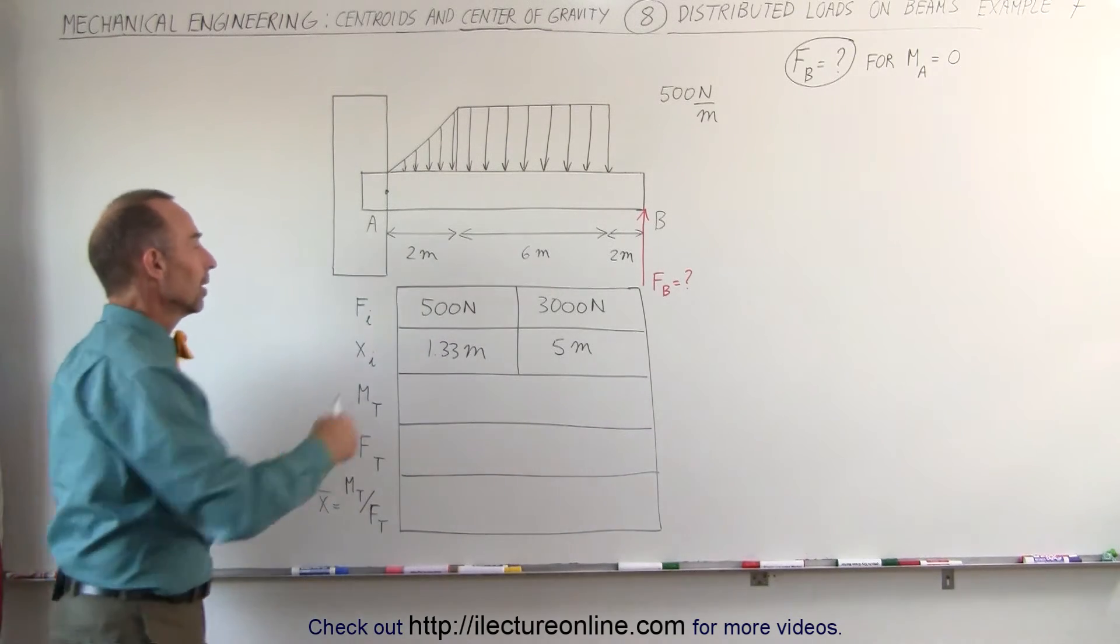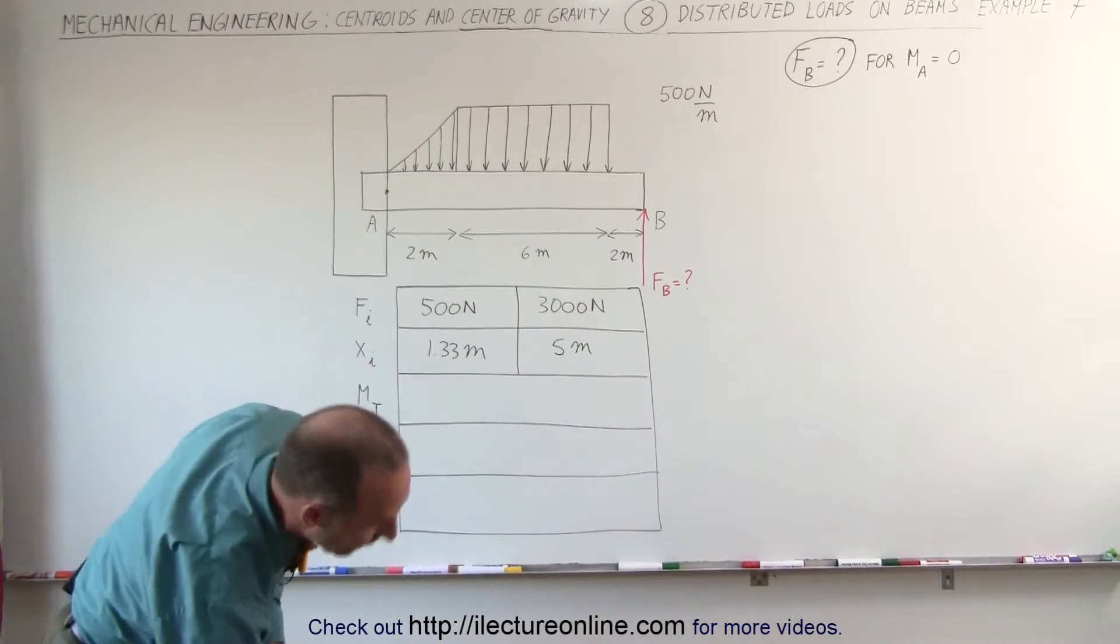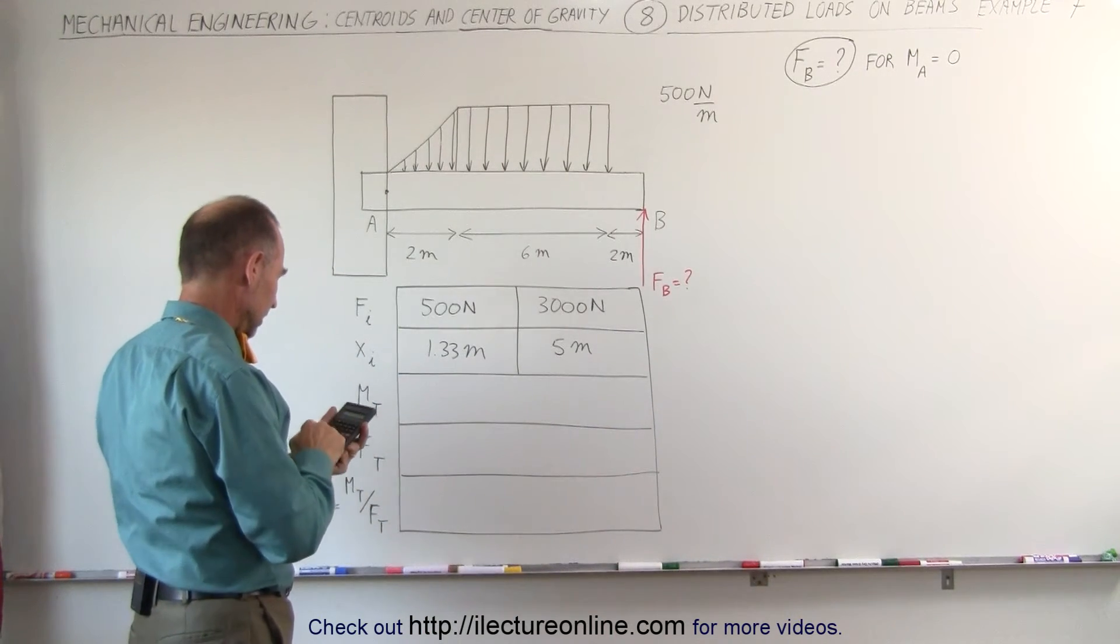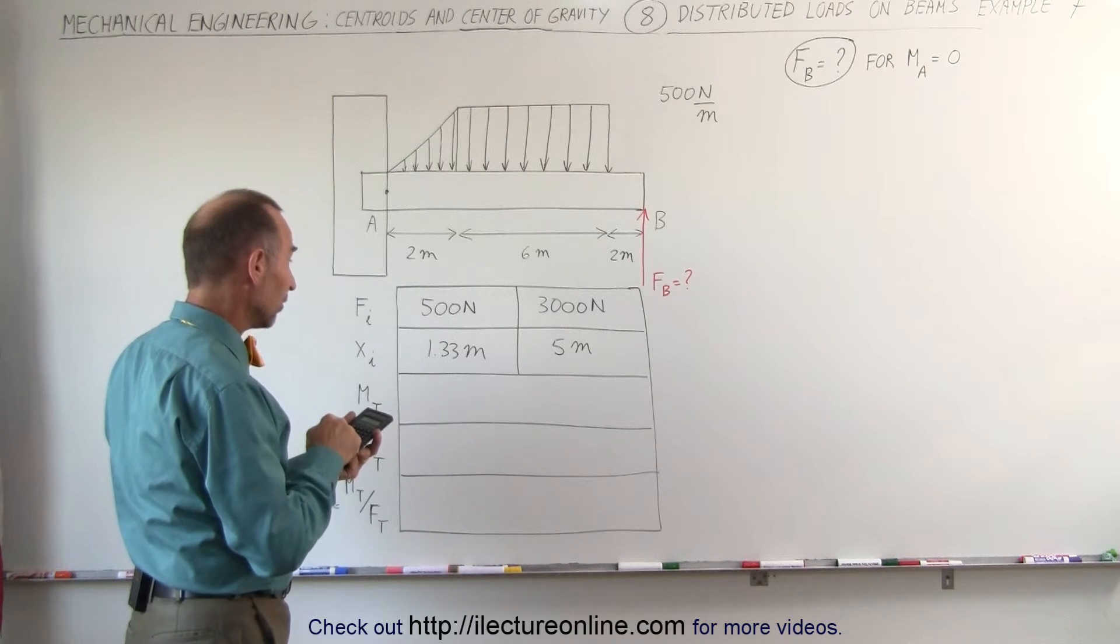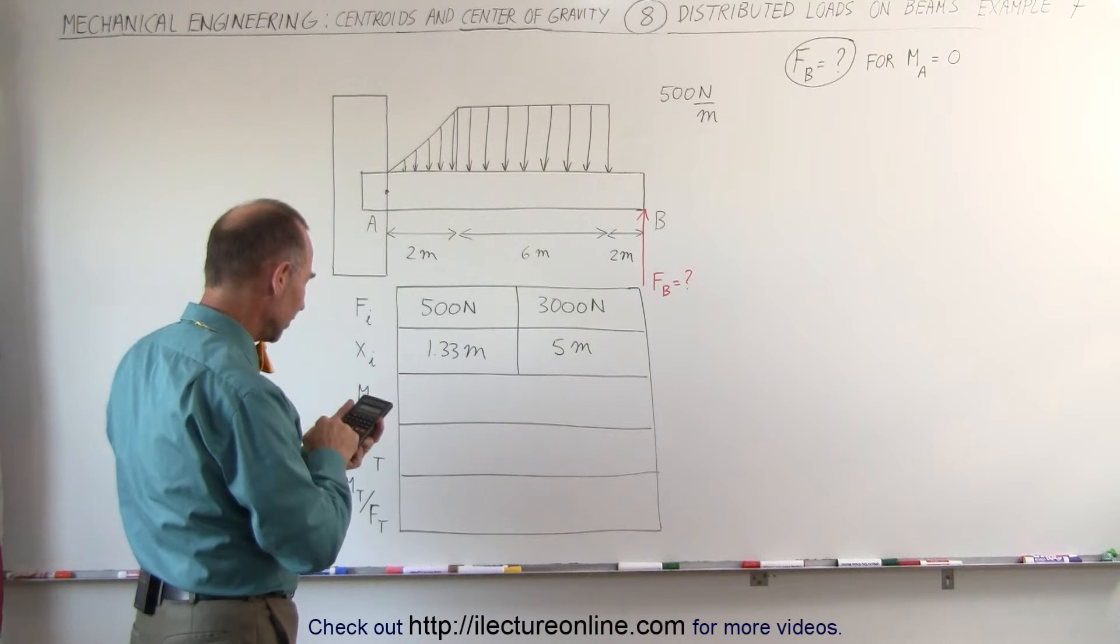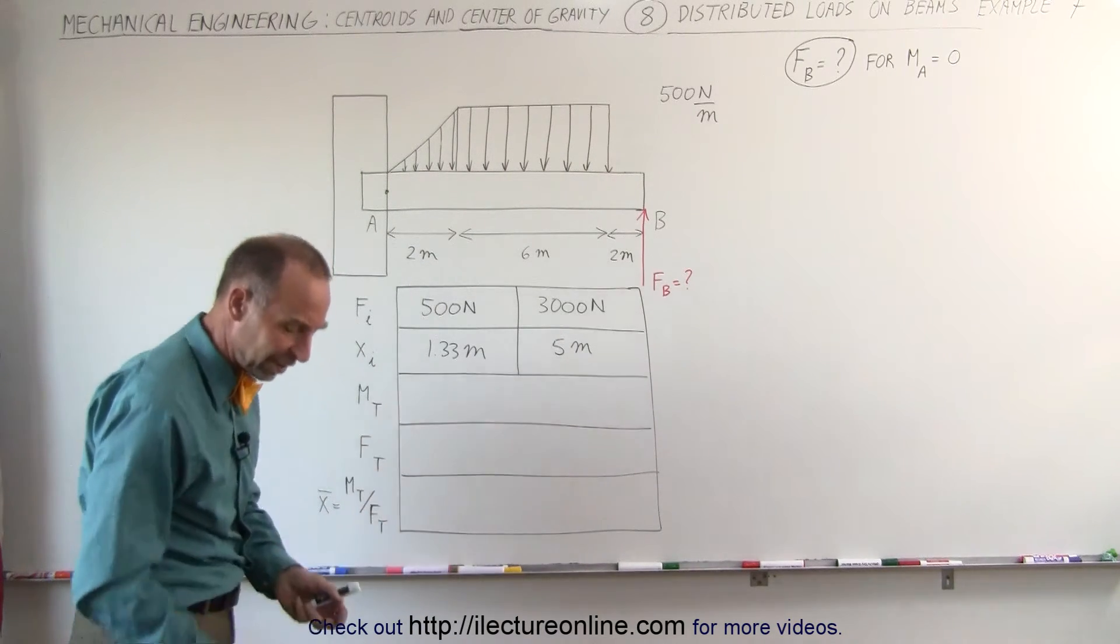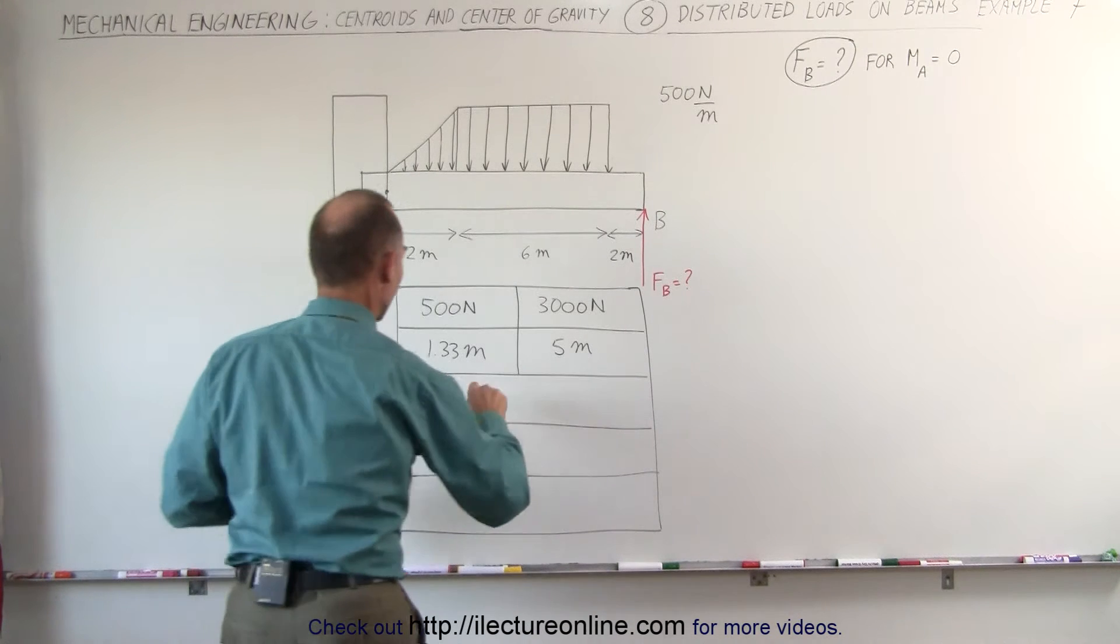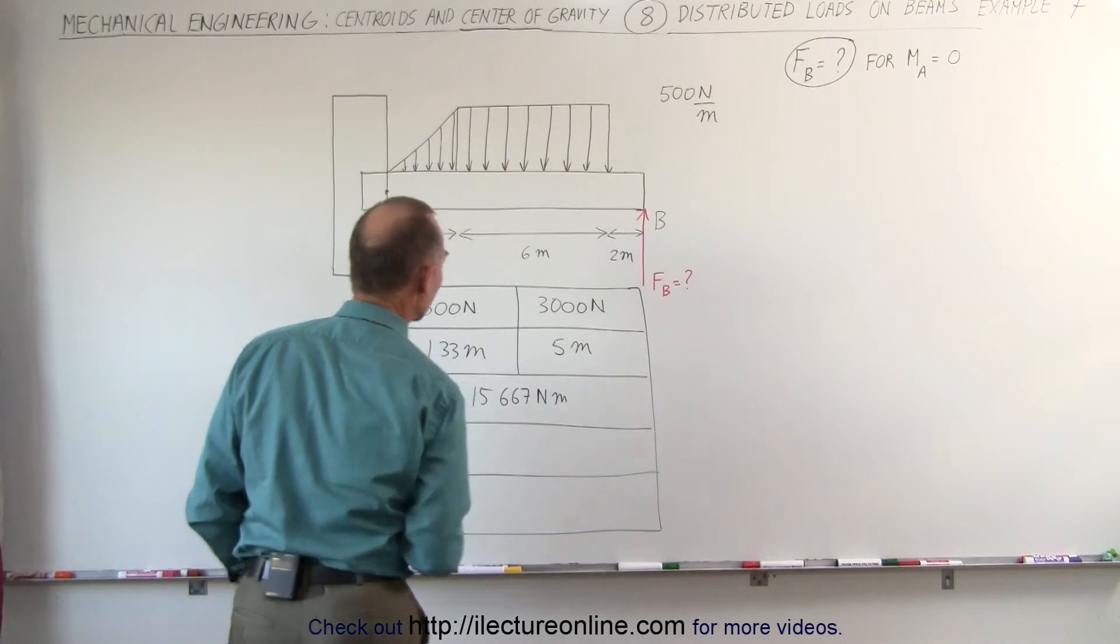The total moment will be the product of this plus the product of that. 500 times 1.33333 plus that would be 3,000 times 5 or 15,000 equals that's 15,667 Newton meters. 15,667 Newton meters for the total moment.